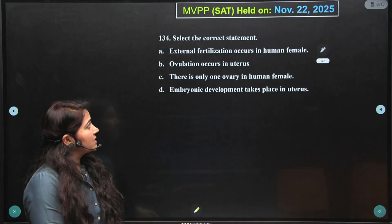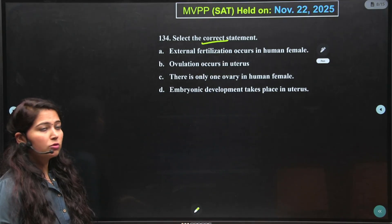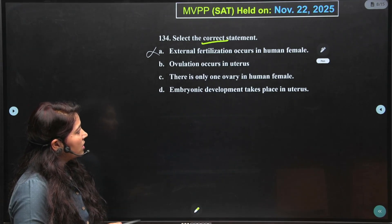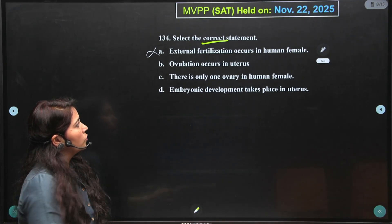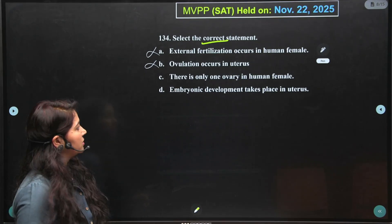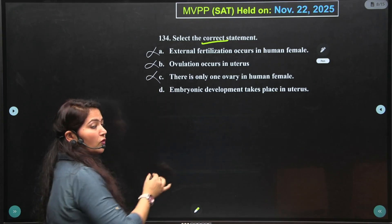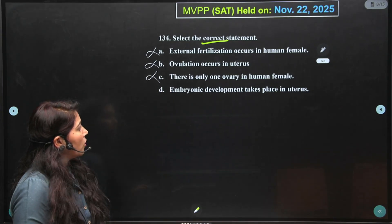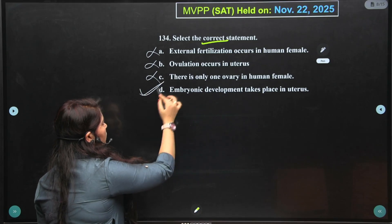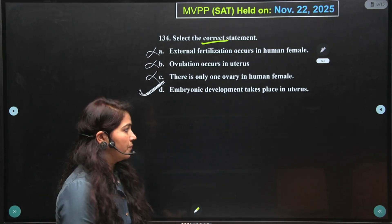Select the correct statement. External fertilization occurs in human beings — not at all, it's internal. Ovulation occurs in uterus — false; ovulation occurs in ovaries and the egg enters the fallopian tube. There is only one ovary in the human female — no, a pair of ovaries are present. Embryonic development takes place in uterus — this statement is perfectly correct. So the answer is option D. This question is from class 8 adolescence chapter.